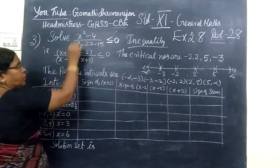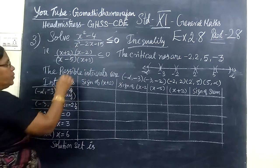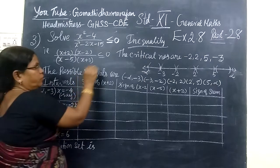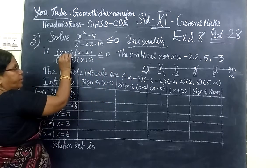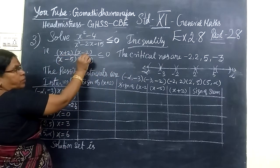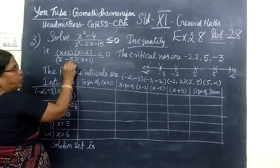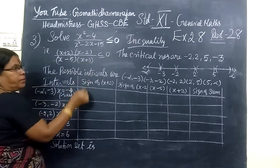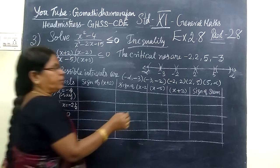This is because of our identity. The identity here is equal to (x + 2)(x - 2). This is very simple. So the critical points on our sign chart are: plus 2 and minus 2, then plus 5, then minus 3.